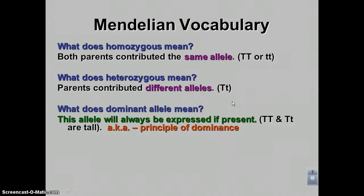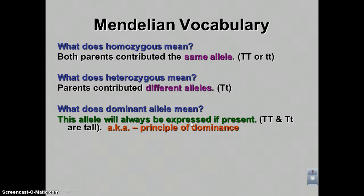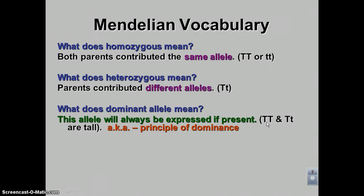Now we can introduce dominant and recessive. The definition of dominant: this allele is always expressed if present. Expressed means the gene goes through transcription and translation and the protein is produced. It doesn't matter what the other allele is — the dominant allele will always be expressed.